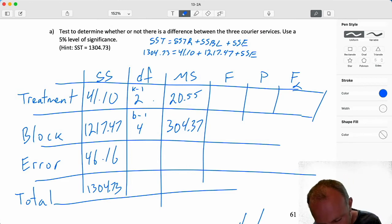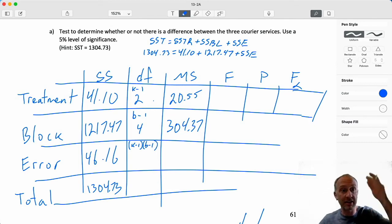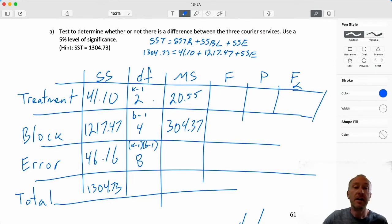Good. Degrees of freedom here. This is the one that's a little bit different. k minus one times b minus one. So it's just a product of those two that are above. So that's going to be eight.